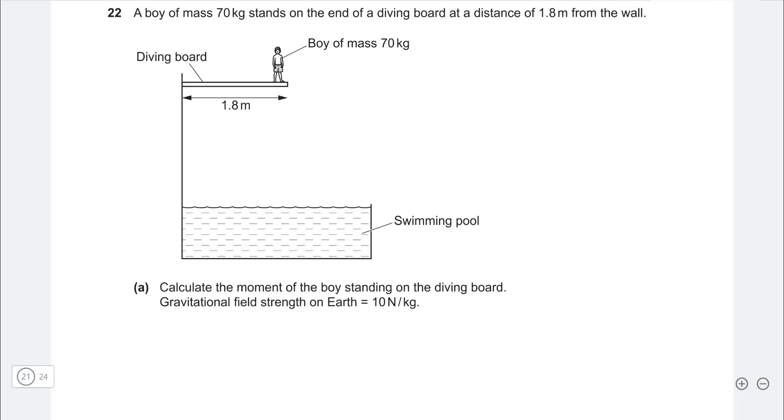Next one. A boy of mass 70 kg stands on the end of a diving board at a distance of 1.8 meters from the wall. Calculate the moment of the boy standing on the diving board. We're given the gravitational field strength on the earth. What force is acting? Well, it is the weight.